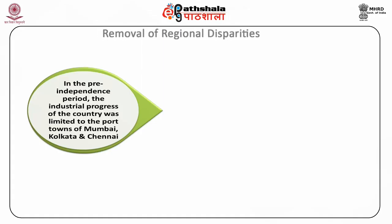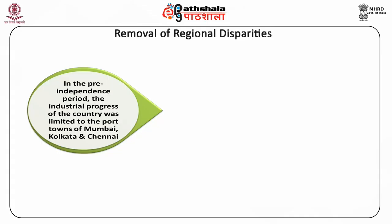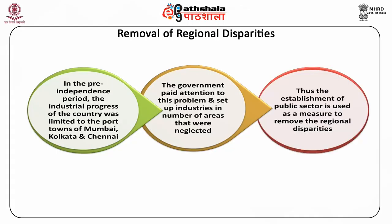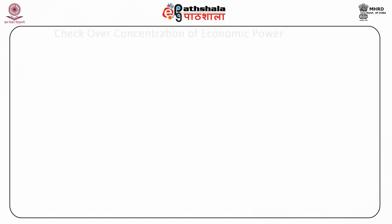Removal of regional disparities: In the pre-independence period, the industrial progress of the country was limited to the port towns of Mumbai, Kolkata, and Chennai, while the other parts of the country lagged far behind. The government paid attention to this problem and set up industries in a number of areas that were neglected by the private sector. Thus, the establishment of public sector is used as a measure to remove regional disparities in industrial development. For example, Bhilai steel plant, Rourkela steel plant, Durgapur steel plant, and Bokaro steel plant — all four steel plants of the public sector were set up in backward states.